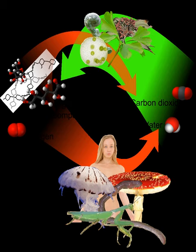Autotrophs can reduce carbon dioxide to make organic compounds for biosynthesis and also create a store of chemical energy. Most autotrophs use water as the reducing agent, but some can use other hydrogen compounds such as hydrogen sulfide. Some autotrophs, such as green plants and algae, are phototrophs, meaning that they convert electromagnetic energy from sunlight into chemical energy in the form of reduced carbon.